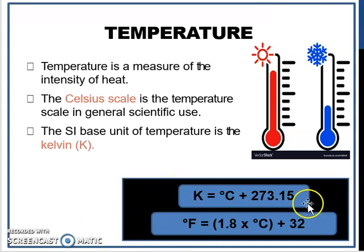And then for degree Fahrenheit, if you want to convert from degree Celsius to degree Fahrenheit, you use degree Fahrenheit equals 1.8 times degree Celsius plus 32.